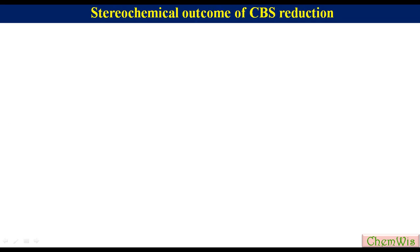Now, let's talk about the stereochemical outcome of this reaction. In the case of solving objective questions in examination halls, you don't have time to go into detailed mechanism. Here, we will discuss some tricks for making a structure of the correct enantiomer. Let's have a hypothetical ketone. To find out the structure of the alcohol, draw an arrow from oxygen to large group to small group.